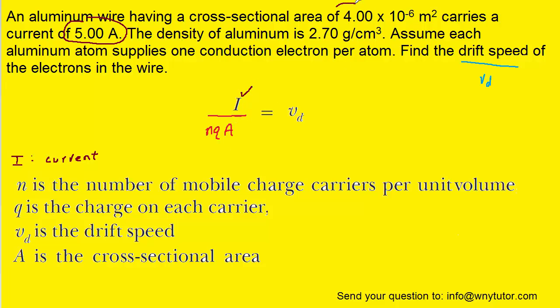A, the cross-sectional area, was also directly given to us, so that's going to be pretty easy. Even Q is sort of known here. It says in the question to assume that each aluminum atom supplies one conduction electron per atom. The key phrase there is one conduction electron. What they're essentially telling us is that for Q, we can use the charge on an electron, which is 1.6 times 10 to the negative 19th coulombs.